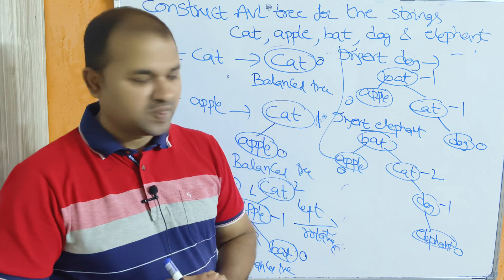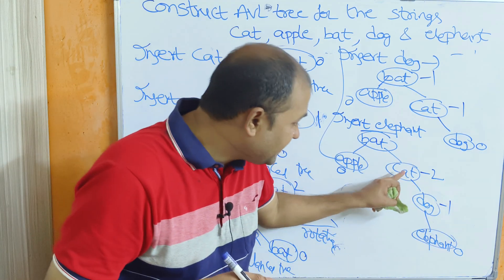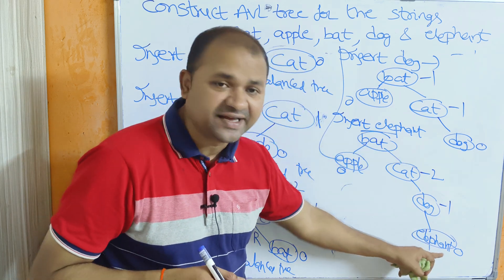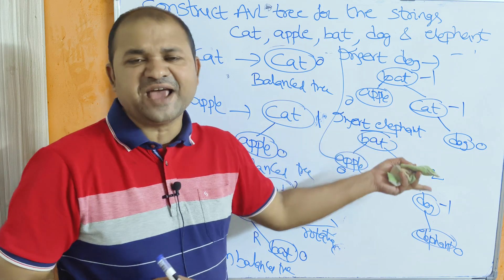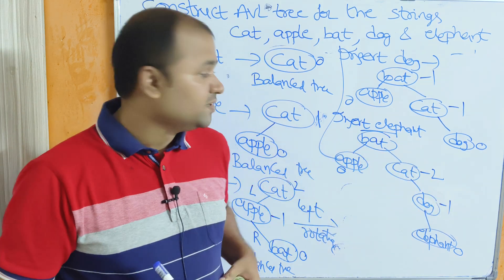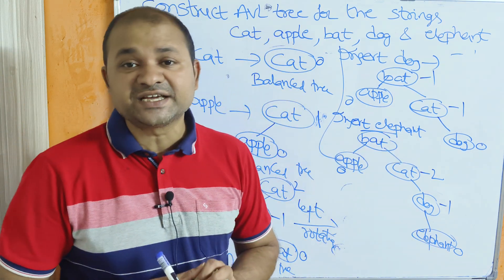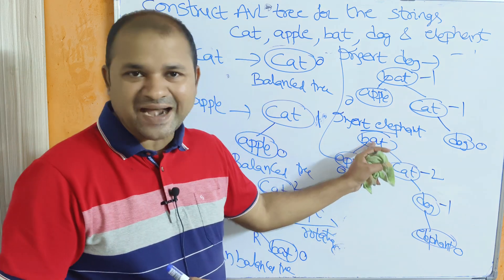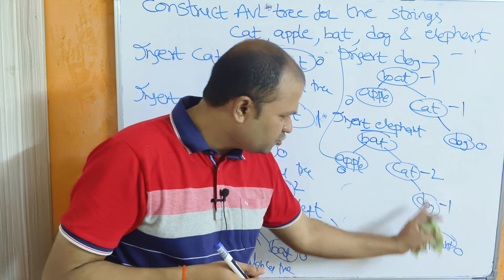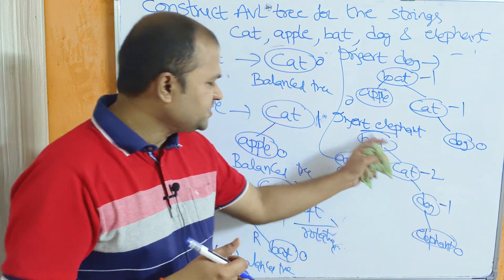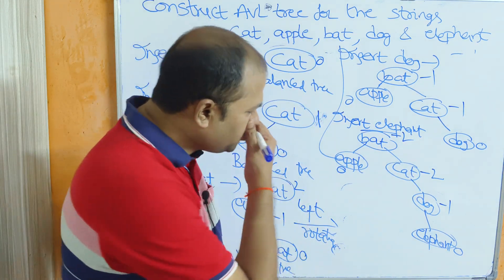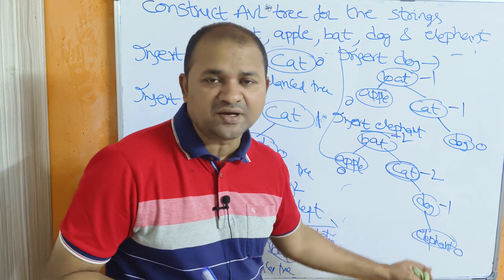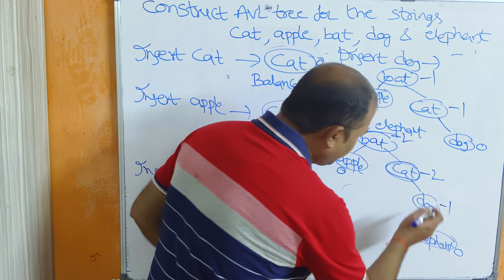There is no need to calculate the balance factor for bat yet, because cat is already unbalanced and cat is nearer to the inserted leaf node (elephant) than bat is. When multiple unbalanced nodes exist, we pick the one nearest to the inserted leaf node. The insertion went right then right from cat, making this an RR case.